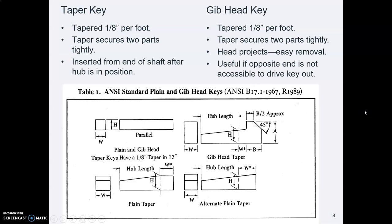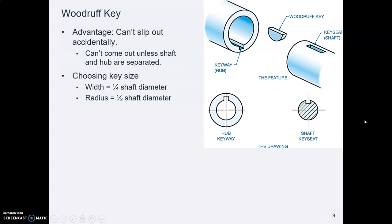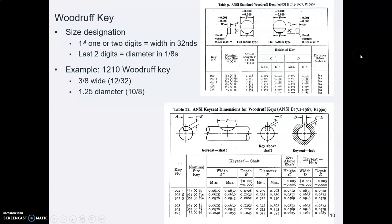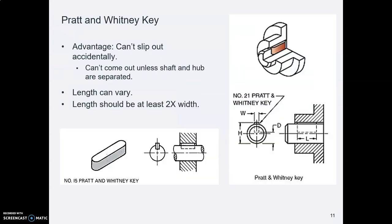You could also use keys of other shapes. A taper key gives a wedging effect, and you can get one with a tab on the end to make it easy to pull out with a screwdriver. A Woodruff key is almost a half-circle and fits into a matching near-half-circle keyway. Machinery's Handbook has tables with dimensions for Woodruff keys. A Pratt & Whitney key fits into a slot made with an end mill.